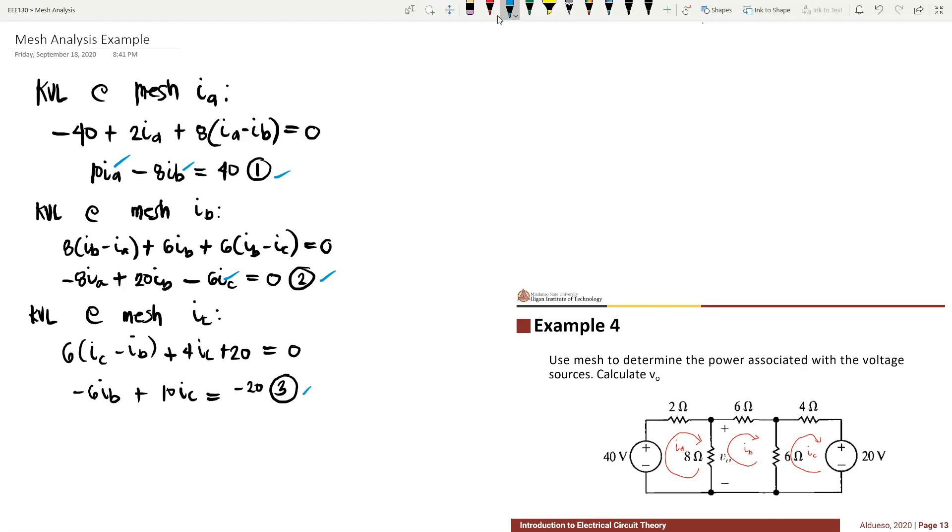We have three equations with three unknowns, so we can solve for the values of Ia, Ib, and Ic. Ia is equivalent to 5.6 amperes, Ib is 2 amperes, and Ic is negative 0.8 amperes.